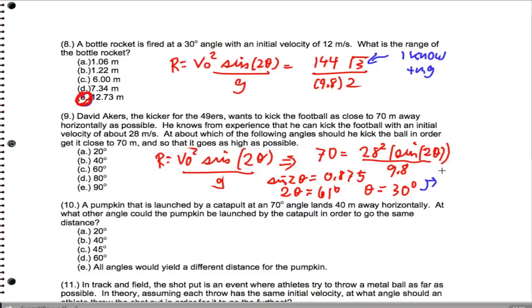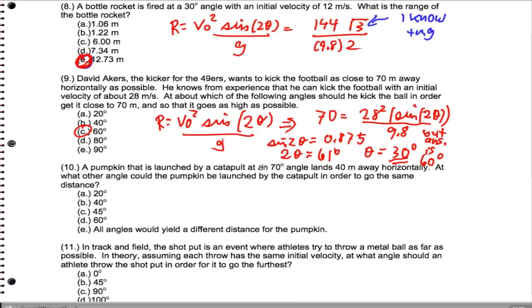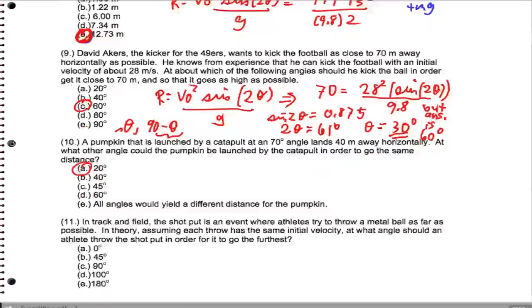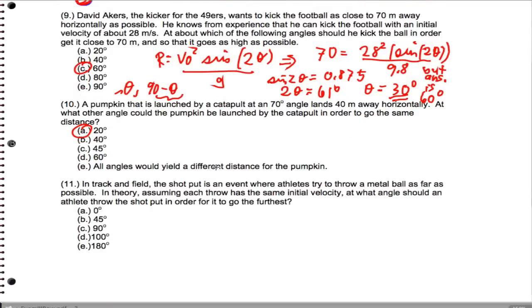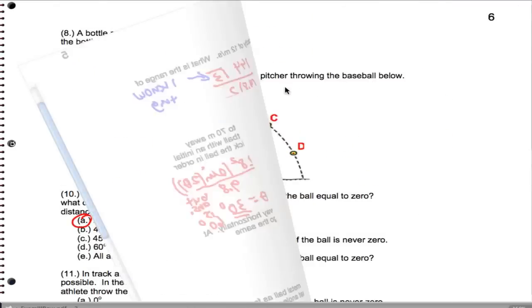Now, to get max height, you use the complement. So I get theta equals 30 degrees, but the answer is 60 degrees because we use the complement. Remember this rule. If I want to get a range, two angles will give me that range. Theta and 90 minus theta will give me the range. For question 10, the answer is A, 20 degrees. Remember that the complement also gives you the same range. That was something we did in class. Now, the angle that gives maximum range is 45 degrees. We went over that in class.